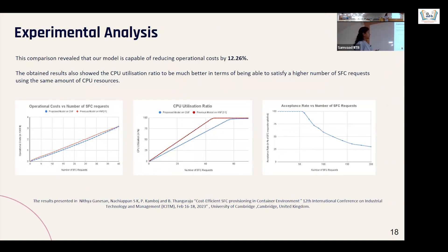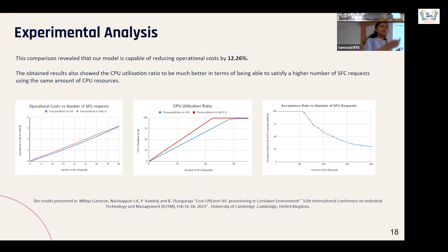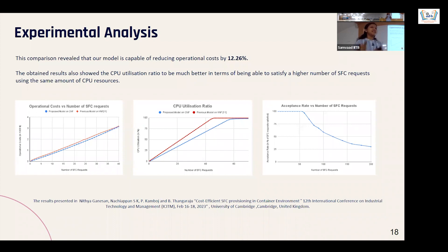An audience member noted: it looks like a general mixed integer programming problem. The response confirmed: yes, we used mixed integer linear programming. The solver used was IBM CPLEX simplex. The questioner asked whether it was solved optimally or with heuristics. Both were used: MILP for the model plus ant colony optimization (ACO) as a heuristic, named improved ACO with embedded MILP constraints to further optimize results.